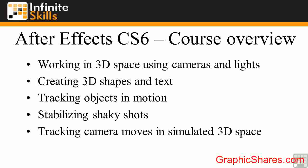Also new to CS6 is the ability to track camera moves in simulated 3D space. If you have a camera move — a point-of-view shot moving forward or backward through a scene, trucking left to right, or a pan — After Effects can analyze that camera move and allow you to put things into the scene that look like they're in 3D space, like a word or an effect. You can even put a sign on a building, and that sign will stick to the building because of the tracked camera move. It's a really cool feature.